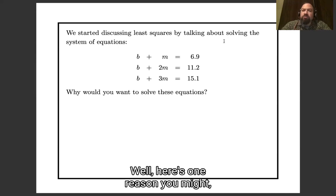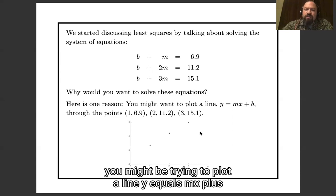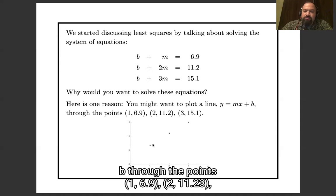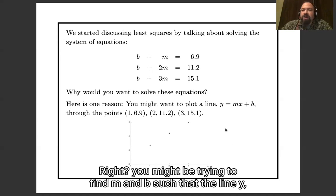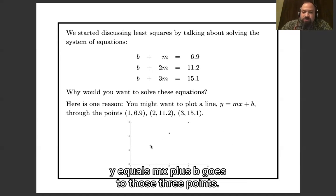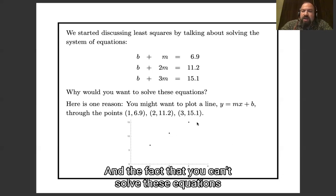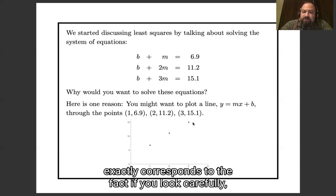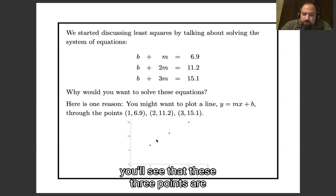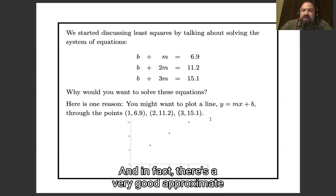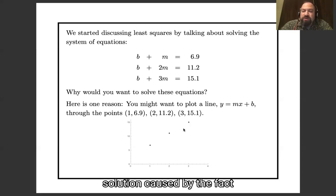Well, here's one reason you might. You might be trying to plot a line y equals mx plus b through the points (1, 6.9), (2, 11.2), (3, 15.1). Right? You might be trying to find m and b such that the line y equals mx plus b goes through those three points. And the fact that you can't solve these equations exactly corresponds to the fact that if you look carefully, you'll see that these three points are not exactly on a line. And the fact that there's a very good approximate solution corresponds to the fact that these three points are very close to approximately on a line.